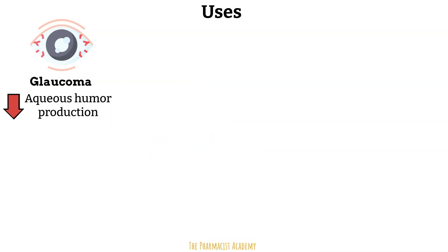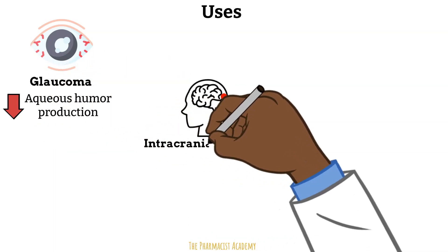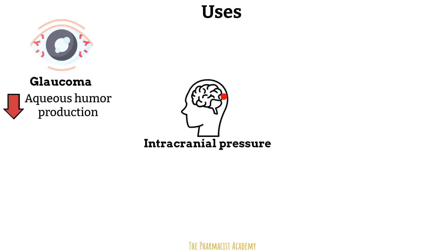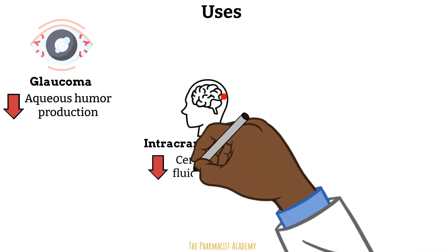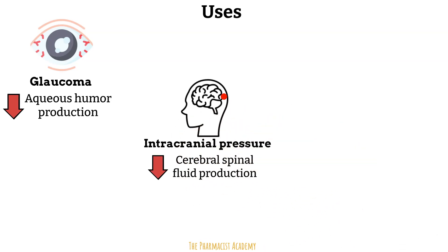They are also used for managing patients with elevated intracranial pressure, which is caused by many things including the buildup of cerebrospinal fluid, or CSF, around the brain and spinal cord. The carbonic anhydrase inhibitors are able to reduce the production of CSF.